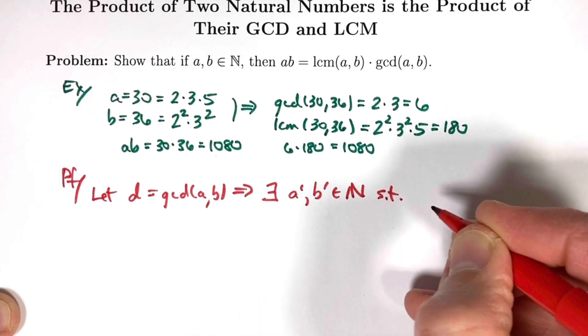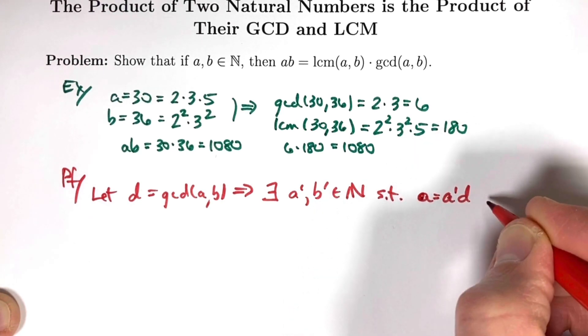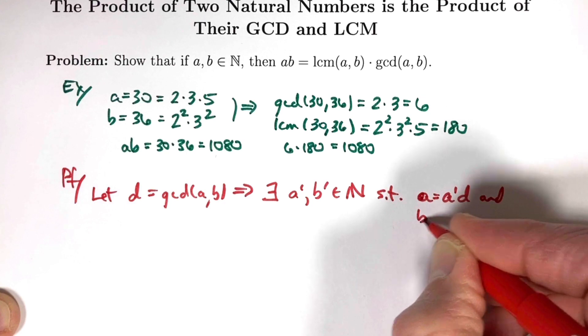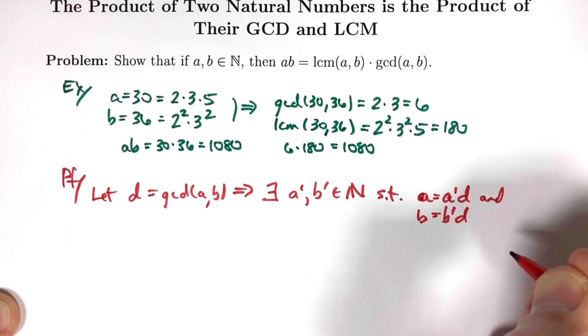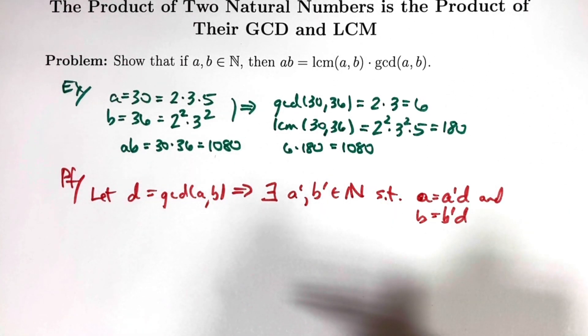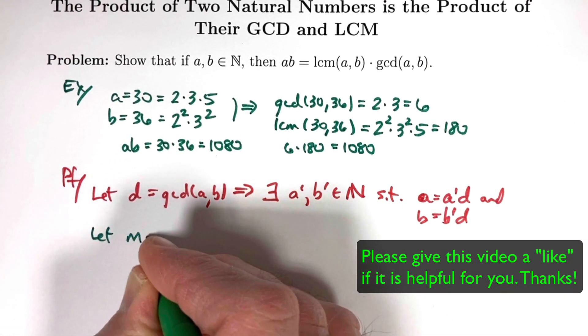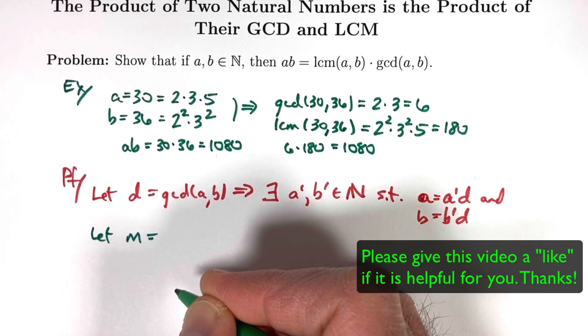...such that A equals A' times D, and B equals B' times D. That's one thing it means, that's teasing out the fact that D is in fact a common divisor of A and B, though it's not using the fact that it is the greatest common divisor of A and B. All right, how about using another symbol? Let's let M be the, well, what we hope to show is the least common multiple.